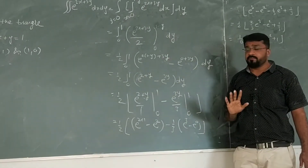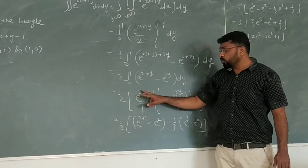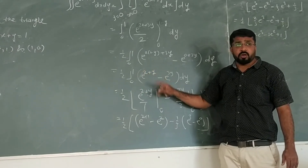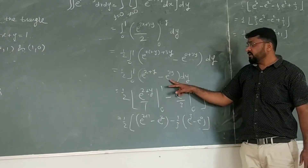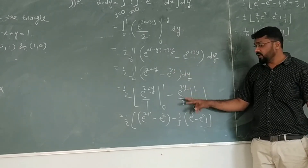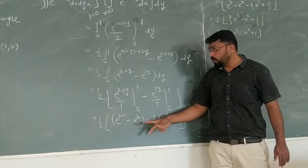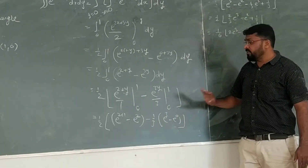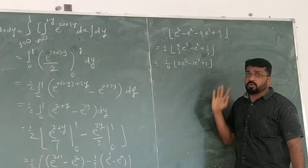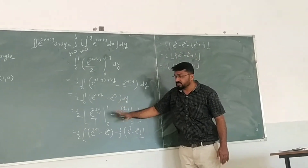Now we integrate with respect to y with limits 0 to 1. We integrate e to the power (2 plus y) — the derivative of (2 plus y) with respect to y is 1, so it integrates directly. Minus e to the power 3y divided by 3. After applying the limits from 0 to 1 and simplifying, we get the answer as 1 over 6 times (2e cubed minus 3e squared plus 1).